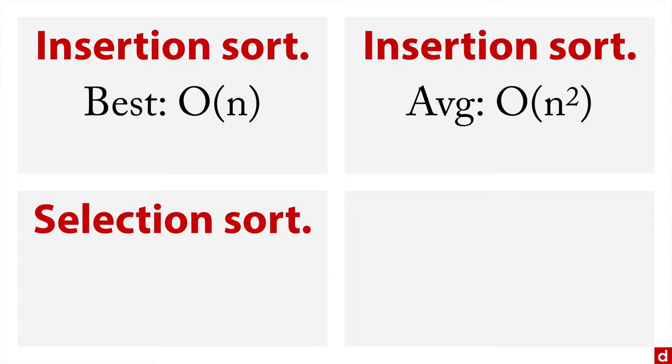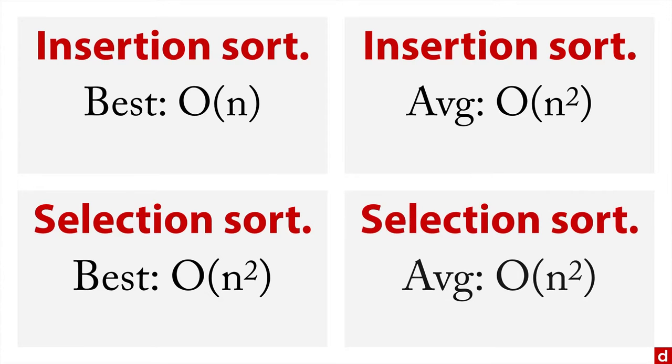Selection sorts, on the other hand, the best is quadratic, and the average is quadratic, it's always consistent. So it's kind of funny, it takes a long time, but at least you know how long it's going to take versus the variability of something like an insertion sort.